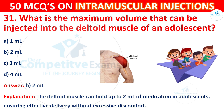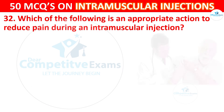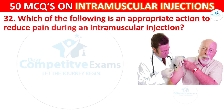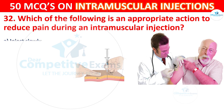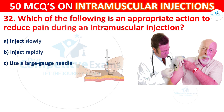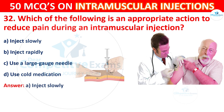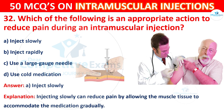Question 32: Which of the following is an appropriate action to reduce pain during an intramuscular injection? Options are: inject slowly, inject rapidly, use a large gauge needle, or use cold medication. The correct answer is A, inject slowly. Injecting slowly can reduce pain by allowing the muscle tissue to accommodate the medication gradually.